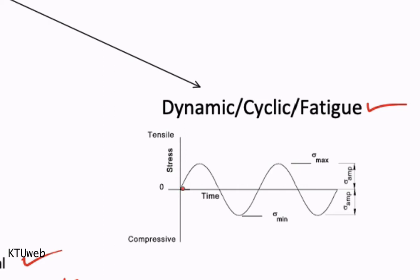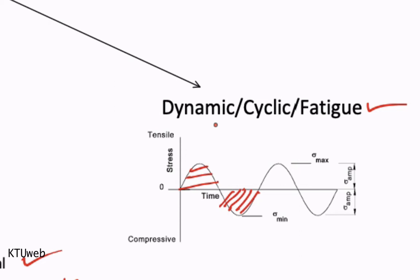Here you can see the load is varying with respect to time. At the beginning there is no load, then load increases in the positive direction, then goes back to zero. The stress is changing direction — at the first cycle it shows a tensile situation, then changes to compression. So tension and compression are experienced by that material time by time. If you are not aware about dynamic or cyclic loading types and nomenclature, please refer to the previous videos on this channel.